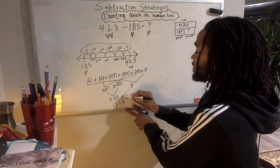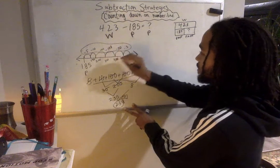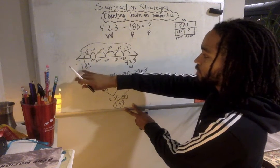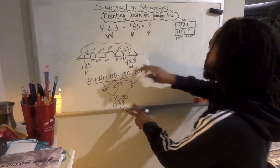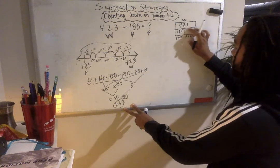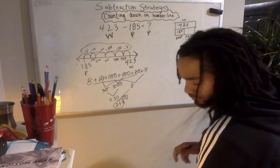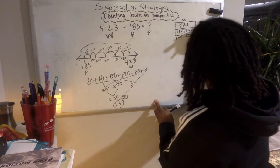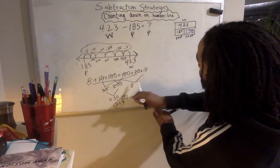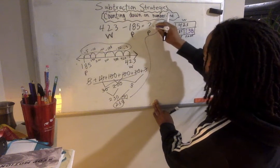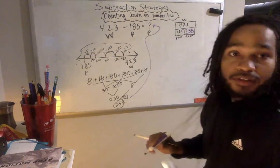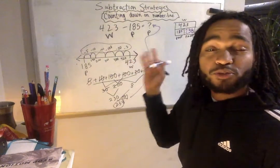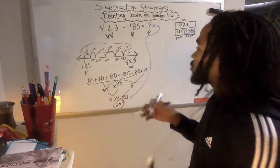So that means that the missing part, the space, the numbers between 185 and 423 was 238. So 238 is that unknown number. That was one way of subtracting on the number line. I'm going to show you a different way.